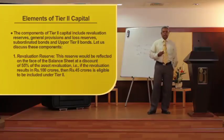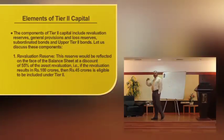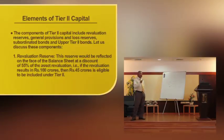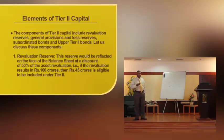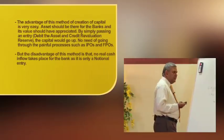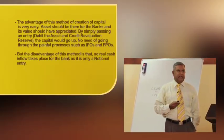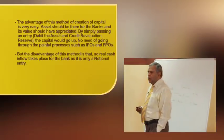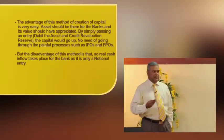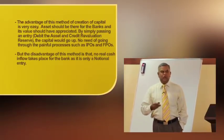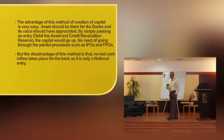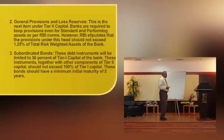For example, if the revaluation results in 100 crores, at a discount of 55%, the remaining 45% means the bank can count 45 crores under revaluation reserve. A simple accounting entry can be passed debiting the asset and crediting revaluation reserve, and immediately the Tier-2 capital goes up. This is the advantage because banks can raise capital without going through the painful process of IPO, FPO, or getting permission from RBI and SEBI. However, the disadvantage is that this is only an accounting or notional entry — the bank does not get any real cash flow.